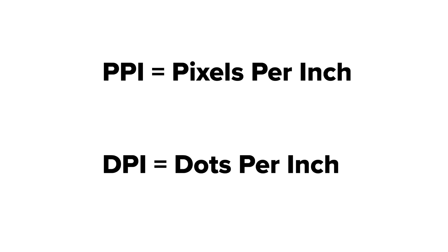Let's go ahead and jump in and try to make it pretty quick. Talk about a couple of things. The first thing would be: what is PPI? PPI is pixels per inch. Now, it often gets confused with DPI, or dots per inch.